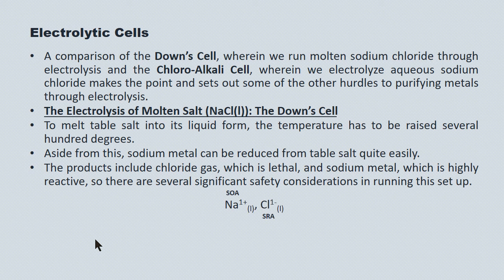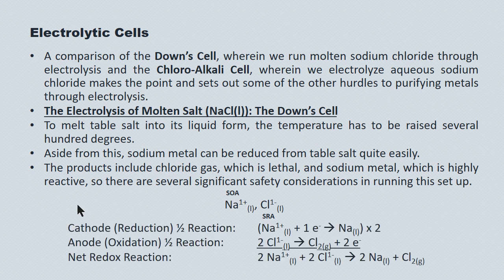If we analyze the down cell system, we have sodium ions and chloride ions. The sodium ions are the strongest oxidizing agent and the chloride ions are the strongest reducing agent. The overall reaction: sodium ions plus chloride ions give us sodium atoms and chlorine gas.